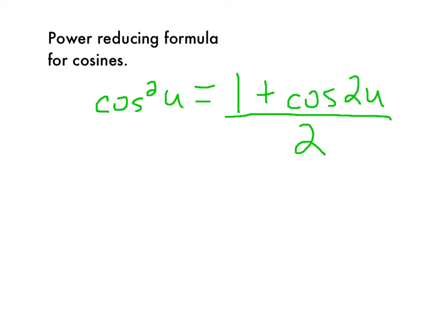So the sine and cosine power reduction formulas are actually quite similar. The sine one, just as a reminder, is sine squared equals 1 minus cosine of 2u over 2. Very similar in nature.